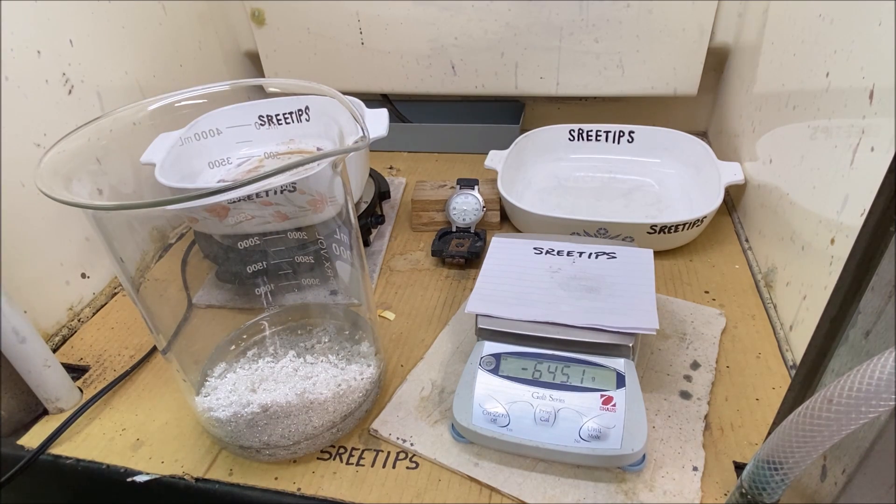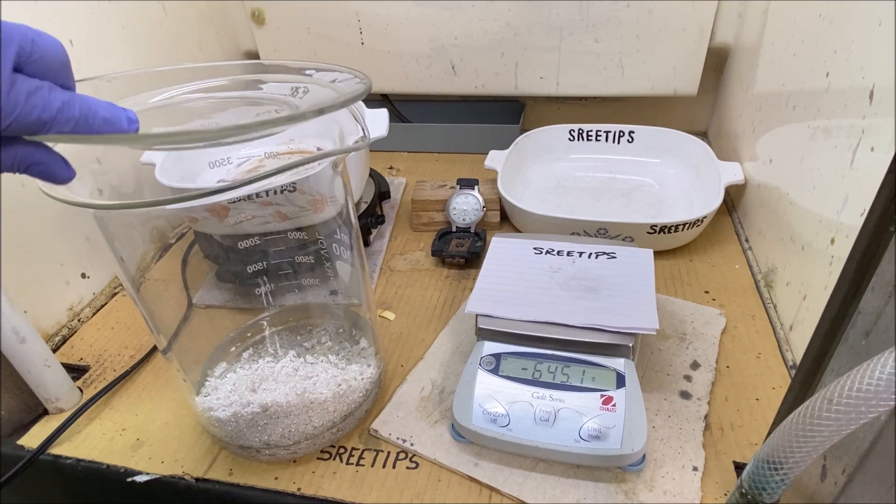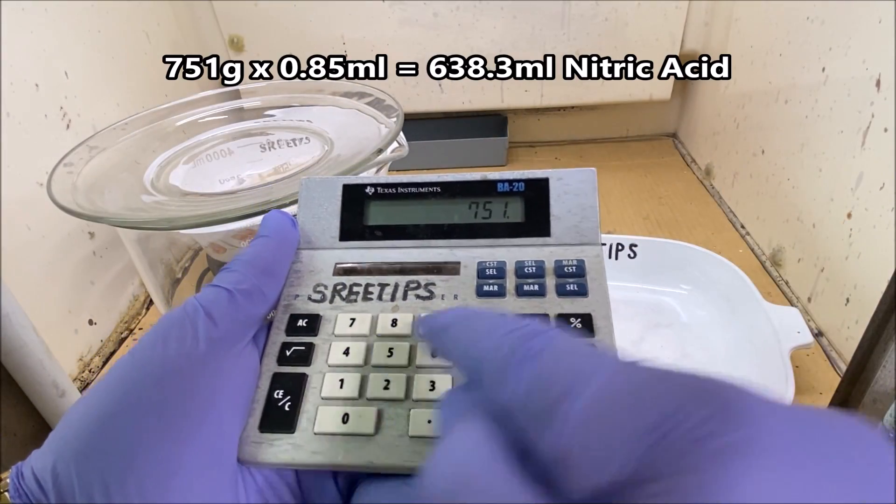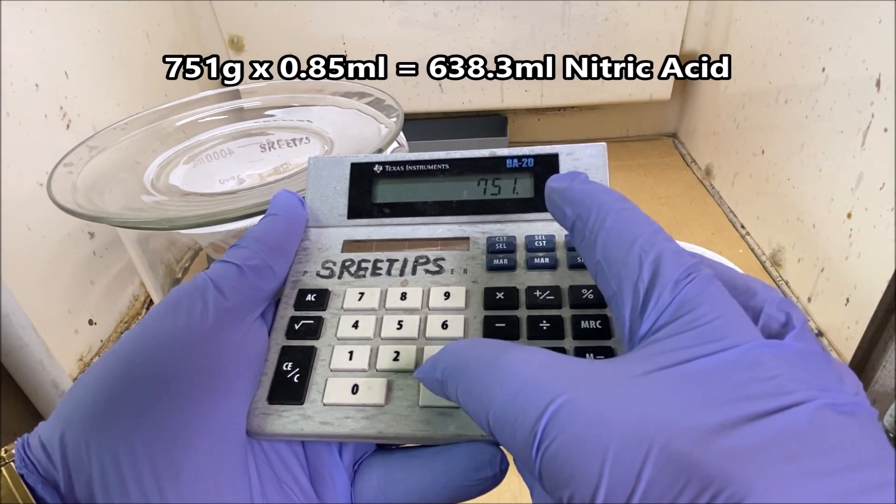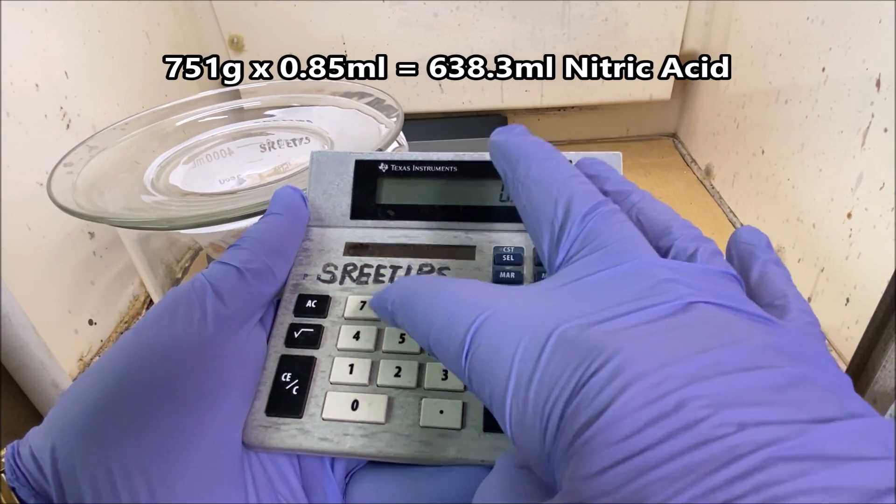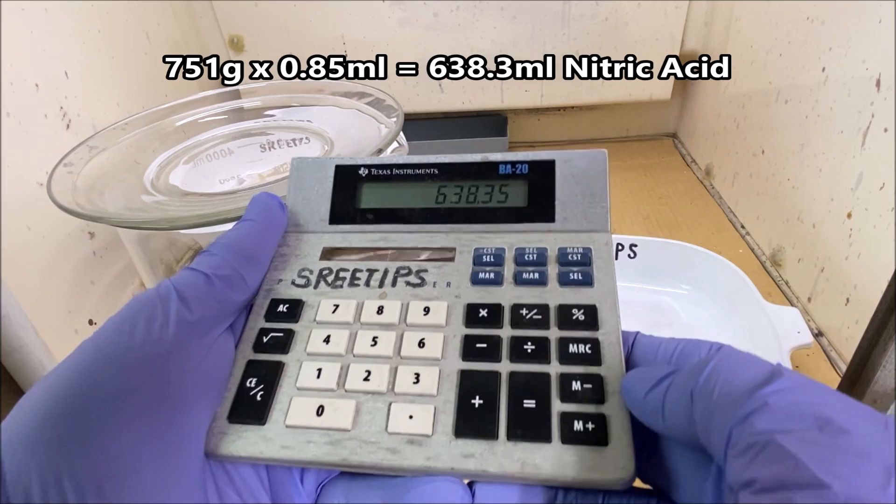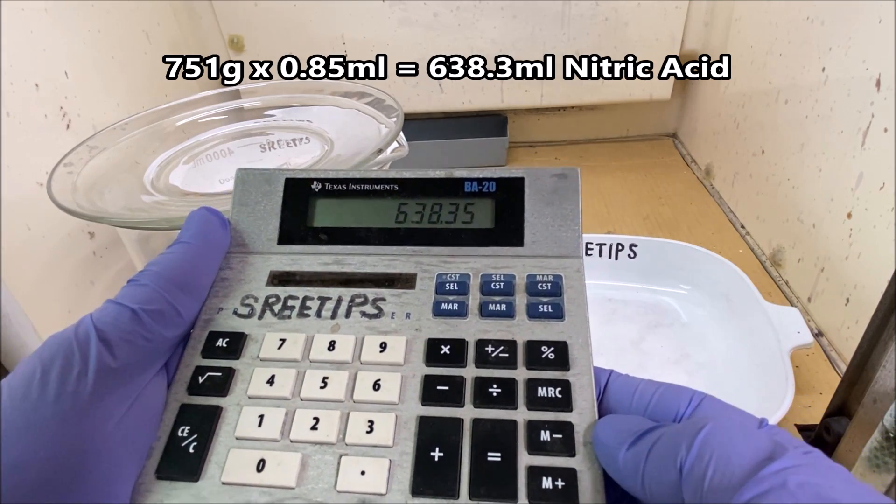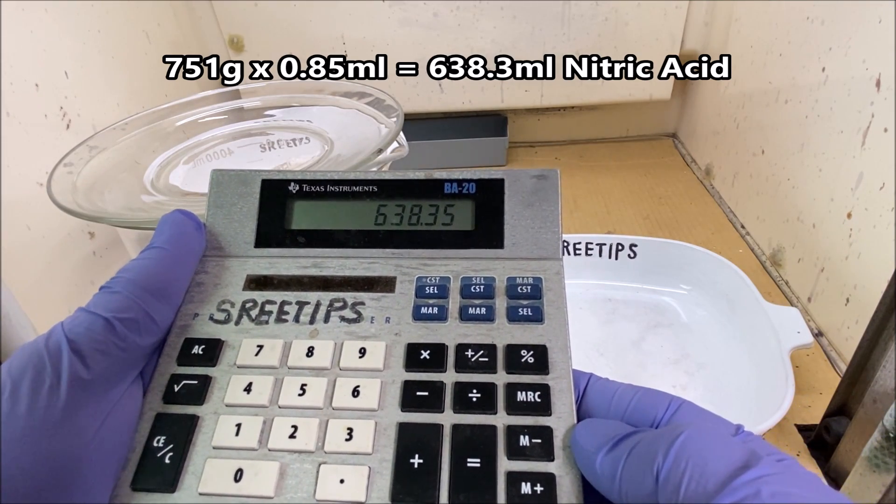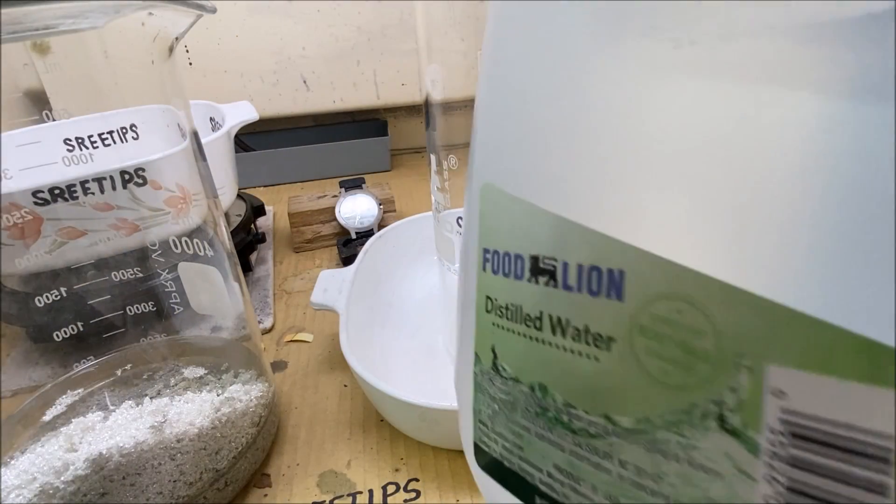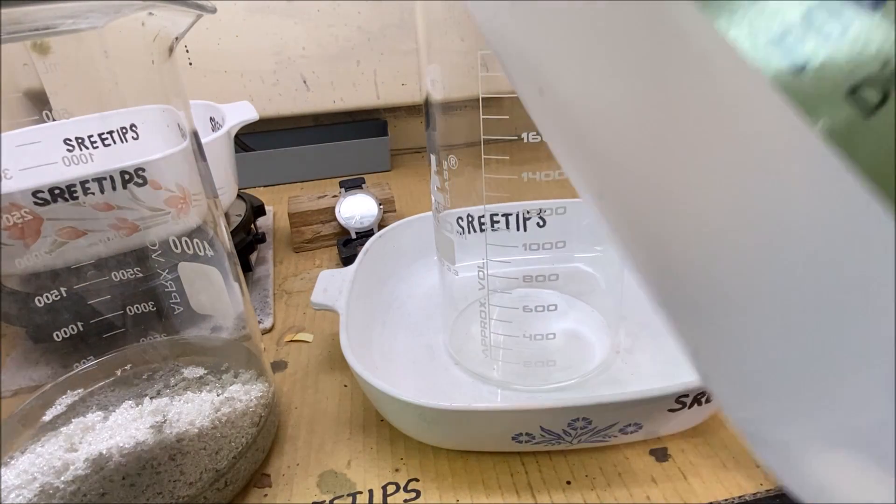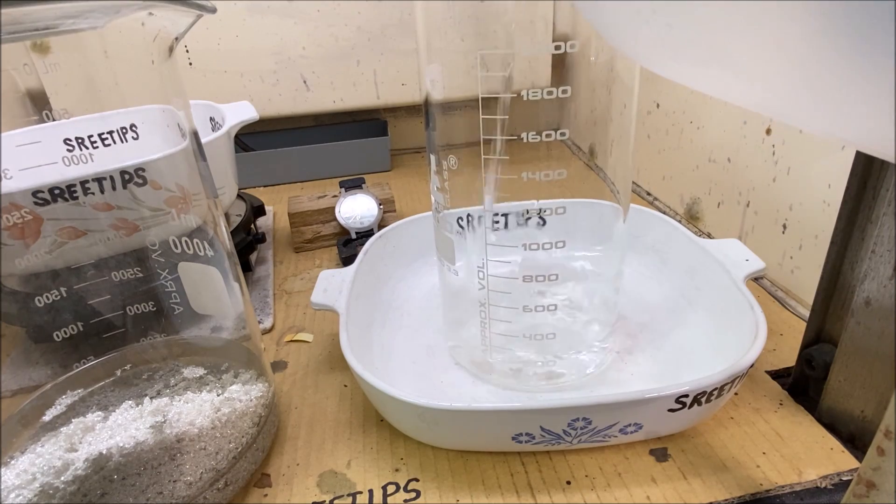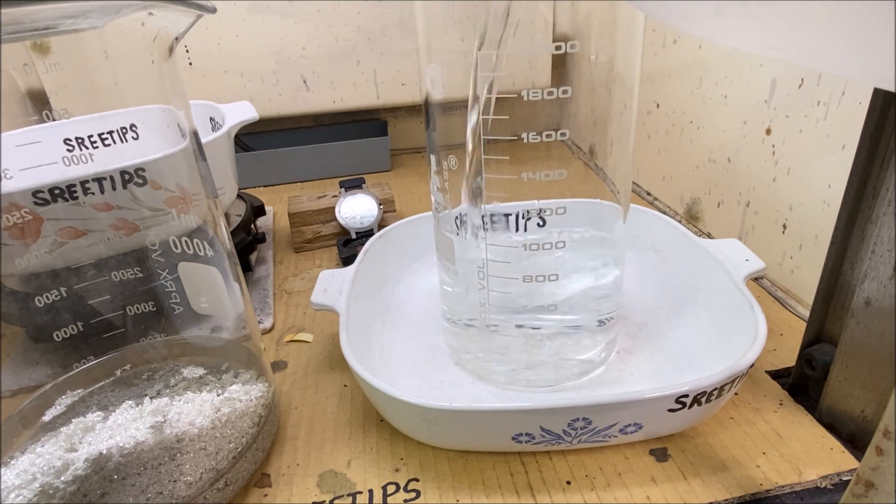That was 751 grams. I'm going to multiply that by 0.85, so we need about 640 milliliters of nitric acid. I'm adding some distilled water to about the 700 milliliter level now.